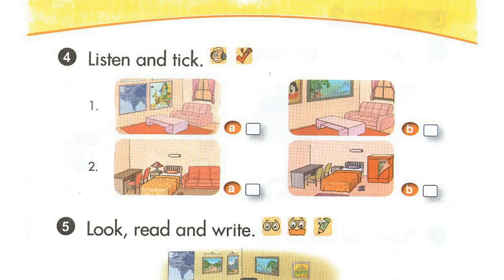Page 25, Lesson 1, Activity 4. Listen and tick. 1. This is a picture of my living room. It's large. Are there any maps in the room? Yes, there are two.